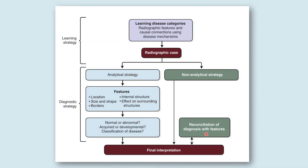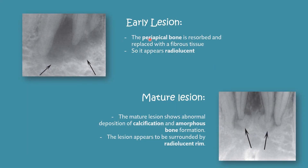There is a flow chart which can easily help you analyze various features and come to a final interpretation. In the early lesion, the periapical bone is resorbed and replaced with fibrous tissue, so it appears radiolucent. In the mature lesion, there is abnormal deposition of calcification and amorphous bone formation, and the lesion appears surrounded by a radiolucent rim. The main difference: the early lesion shows a radiolucent lesion with no calcification, while the mature lesion shows calcification, bone formation, and a surrounding radiolucent rim.